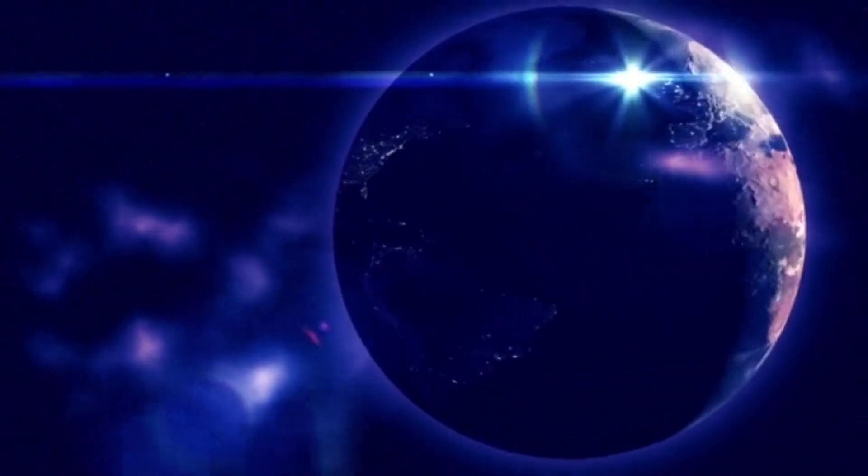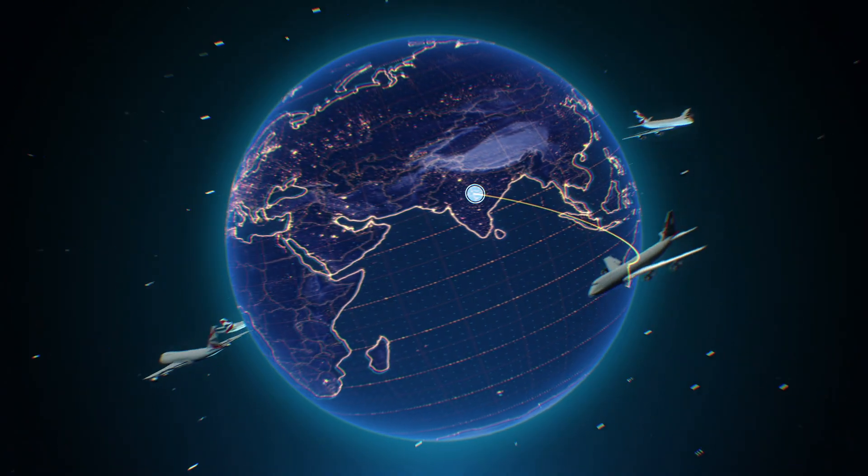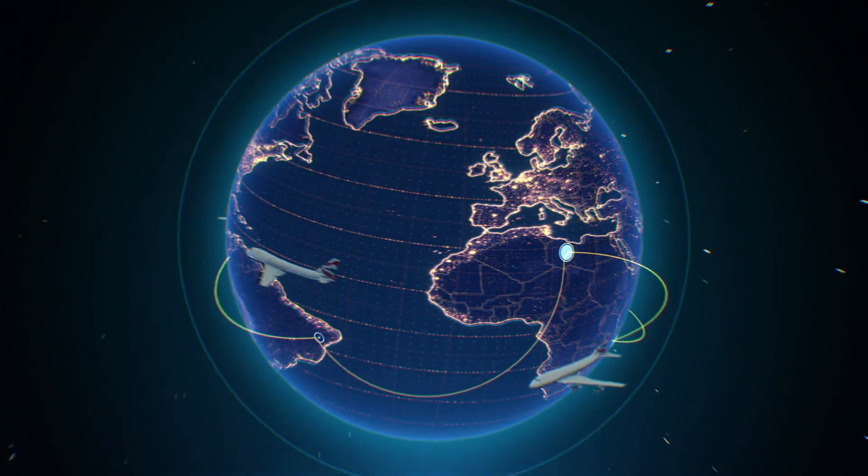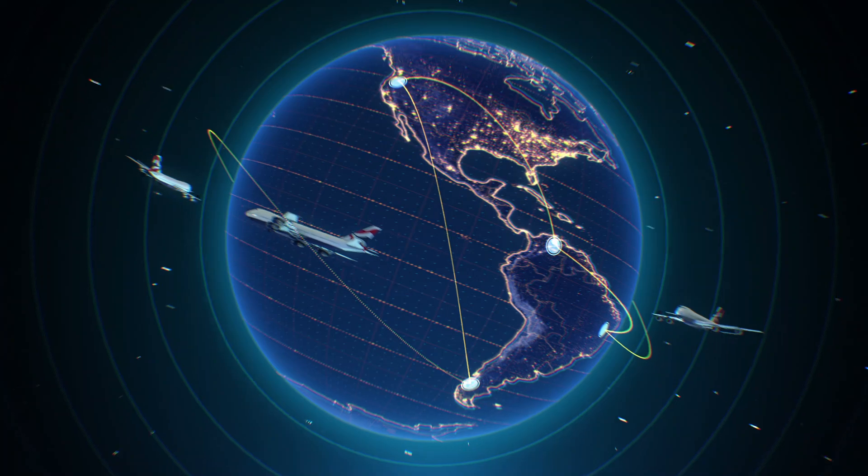Earth also has an invisible shield around it called the atmosphere. This atmosphere is like Earth's blanket. It's made of gases, like oxygen that we breathe, and nitrogen, which is the most common gas.